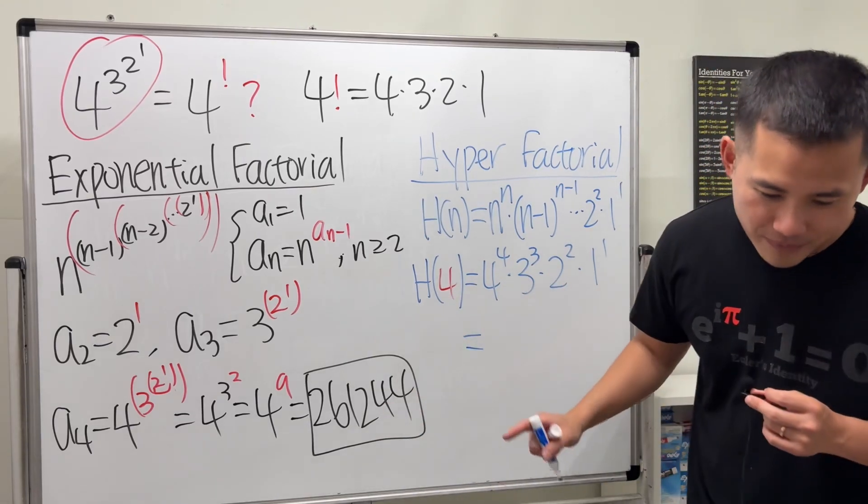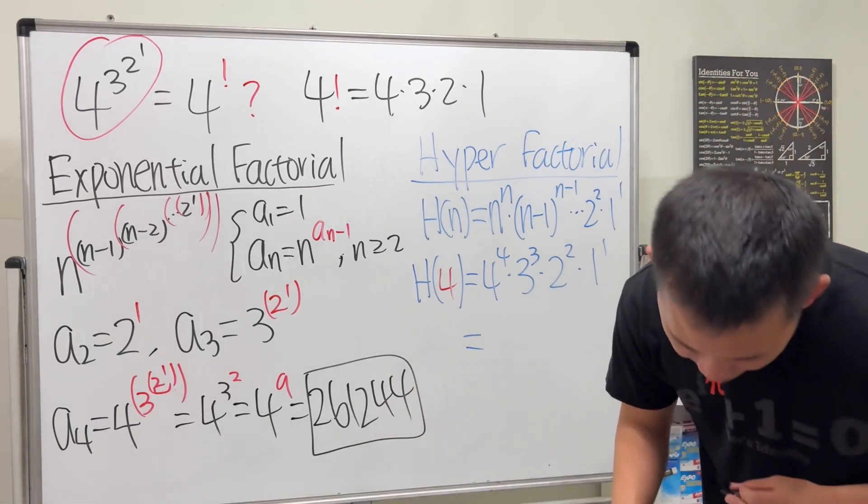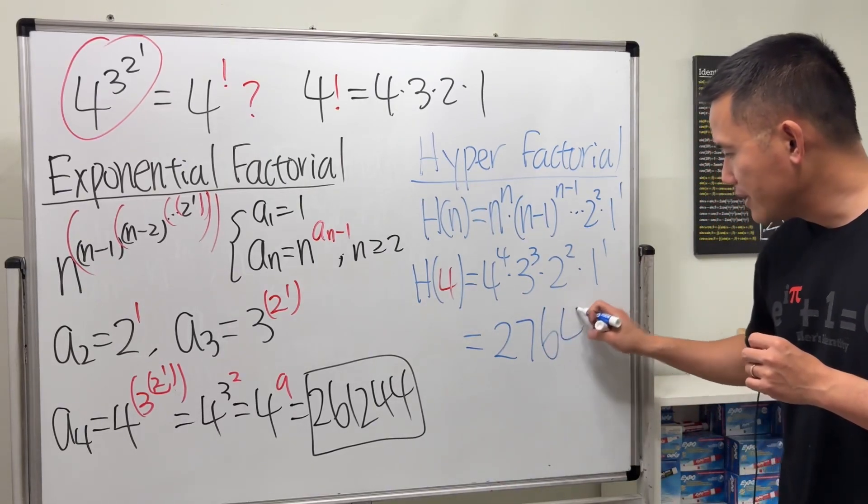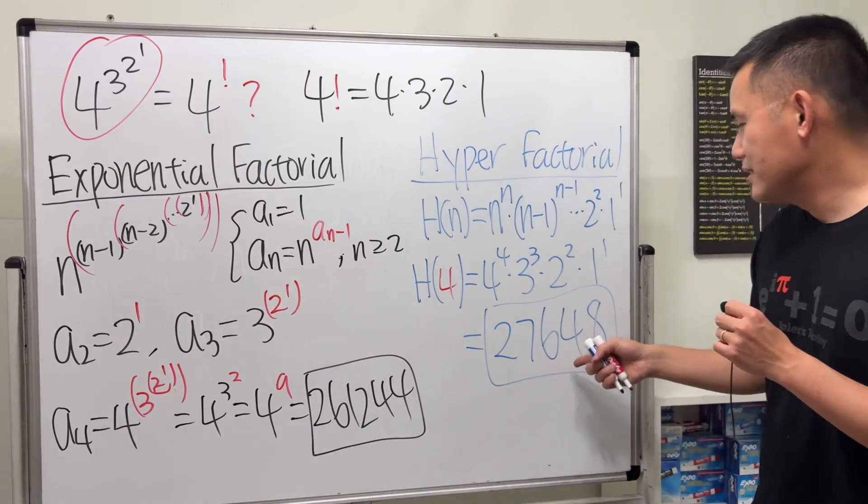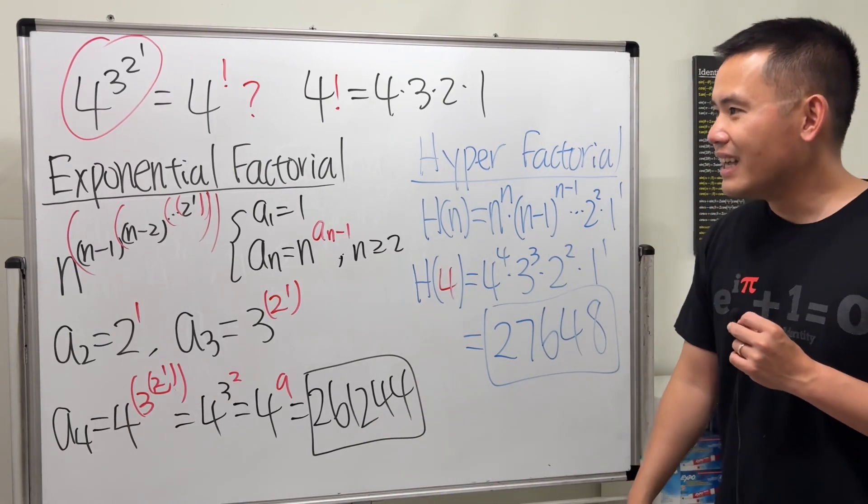This is bigger. I haven't remembered the answer here—27648. This has six digits, this only has five.